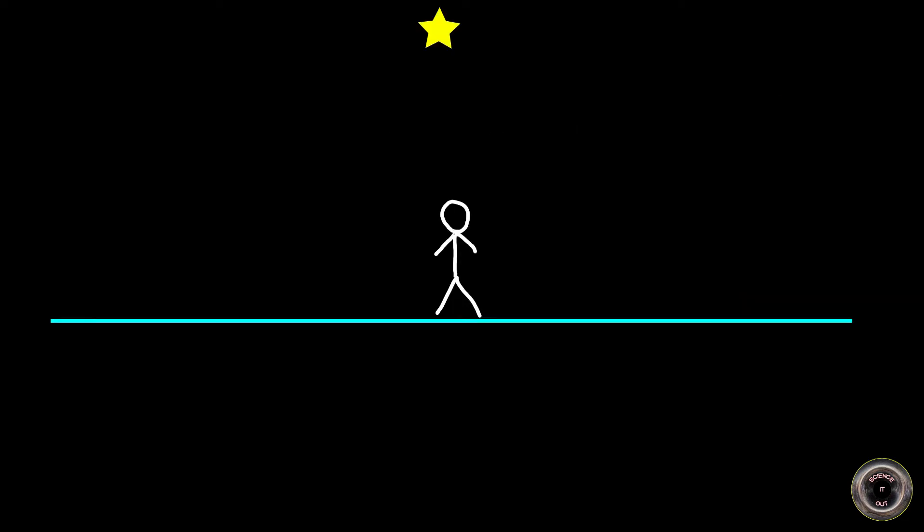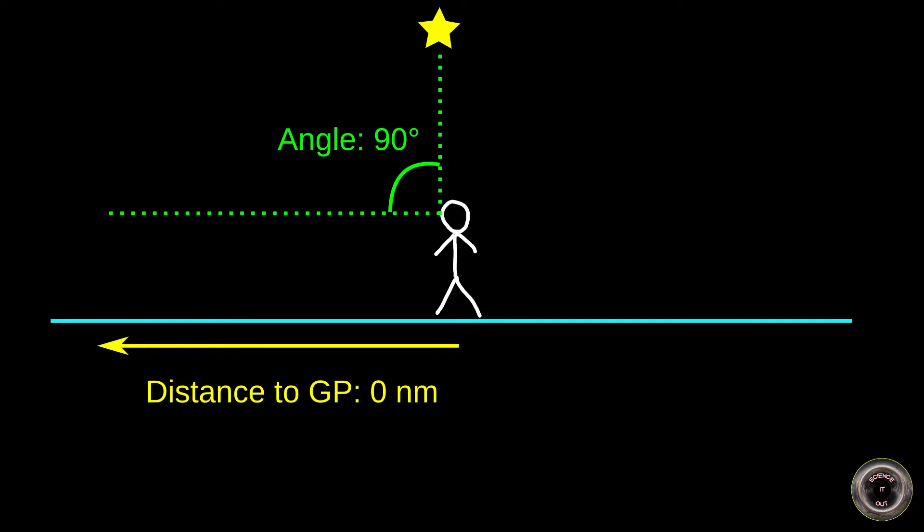So let's think what's going to happen if we stand at the GP of some star, and we start to move away from it along a straight line. As I've already said, the elevation angle of the star starts at 90 degrees. Once we move to 60 nautical miles away, it will drop to 89 degrees. Another 60 nautical miles, another degree. And so on.